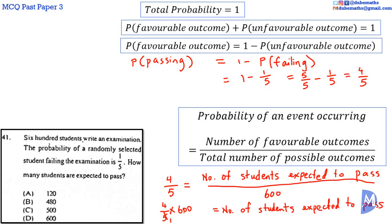Canceling 5 into 5, 1, 5 into 600, 5 into 6 1 with 1 remaining, 5 into 10 2, 5 into 0 0, so 120. 4 multiplied by 120 is equal to 480. The number of students expected to pass is equal to 480. The answer is B.